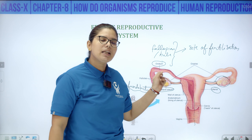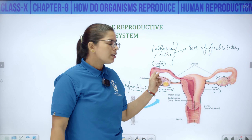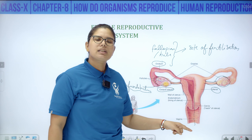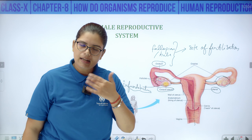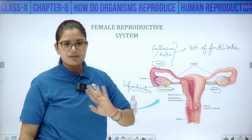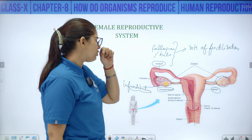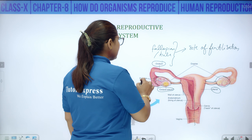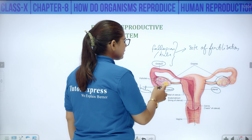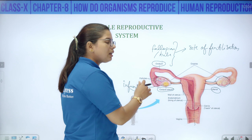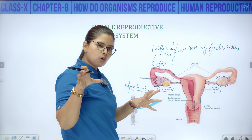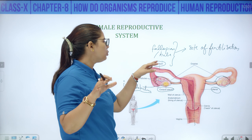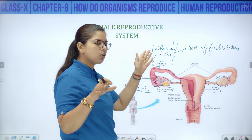If the egg does not meet the sperm in the fallopian tube, it degenerates and is released in the menstrual cycle — the unfertilized egg is discharged. The female reproductive system consists of a pair of ovaries, finger-like structures holding the ovary connected to the oviduct, infundibulum, oviduct or fallopian tube where fertilization occurs.